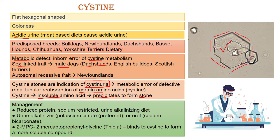For management, prevention, or treatment: first, you have to reduce protein and use sodium-restricted, urine-alkalinizing diets. This will change the pH to basic, and since these stones form in acidic urine, alkalinization is the key treatment and prevention protocol.